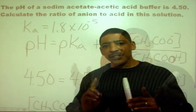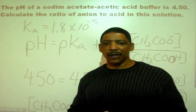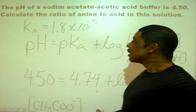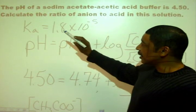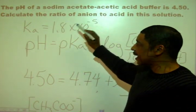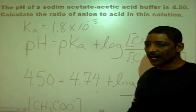So let's go directly to the Henderson-Hasselbalch equation. From a table of Ka values, I know that the Ka value for acetic acid is 1.8 times 10 to the minus 5.